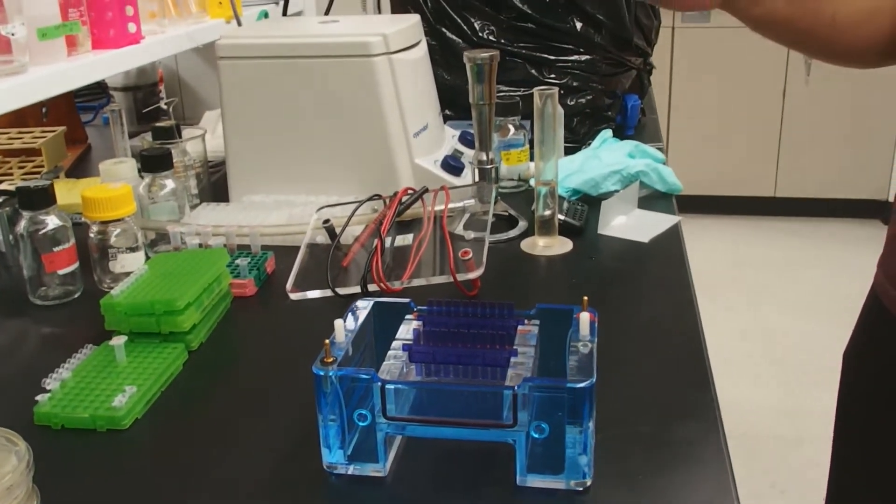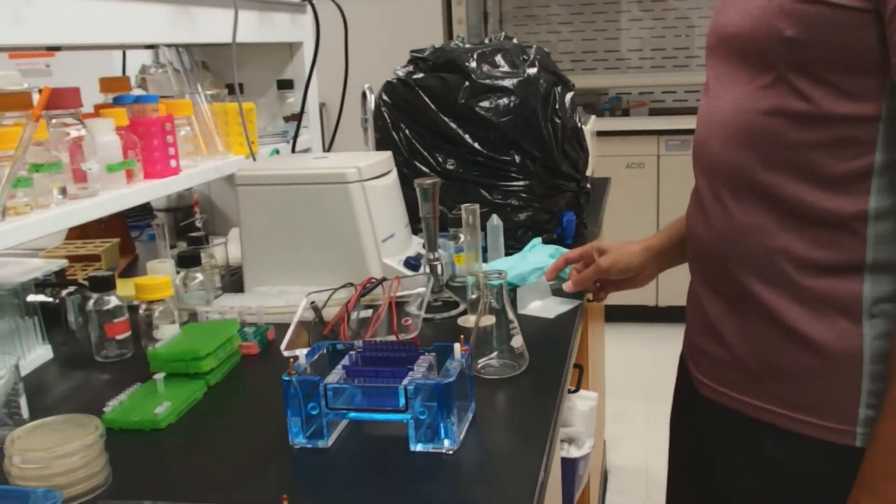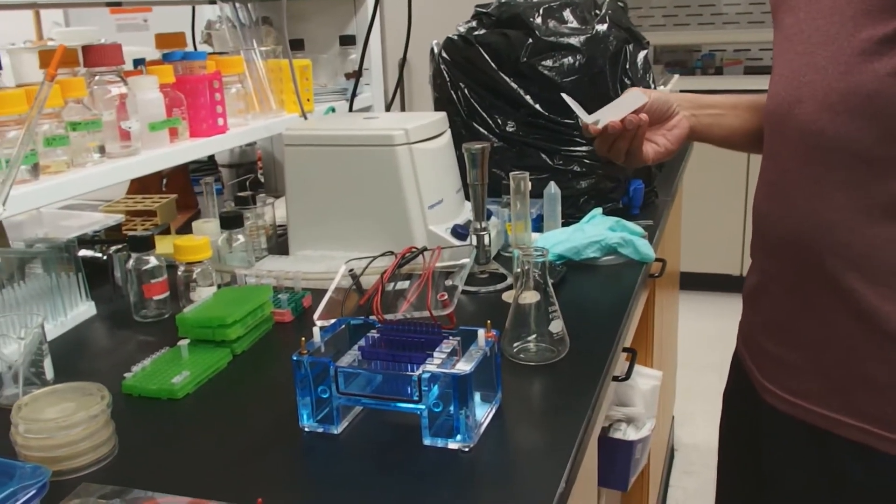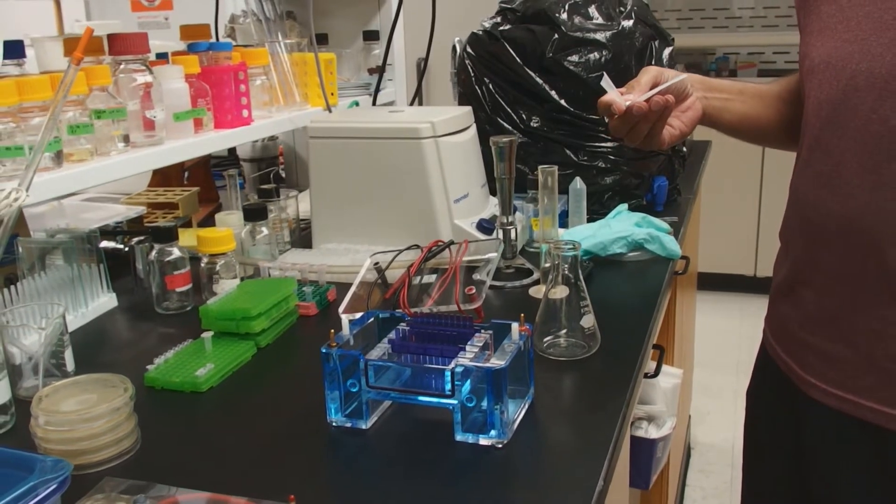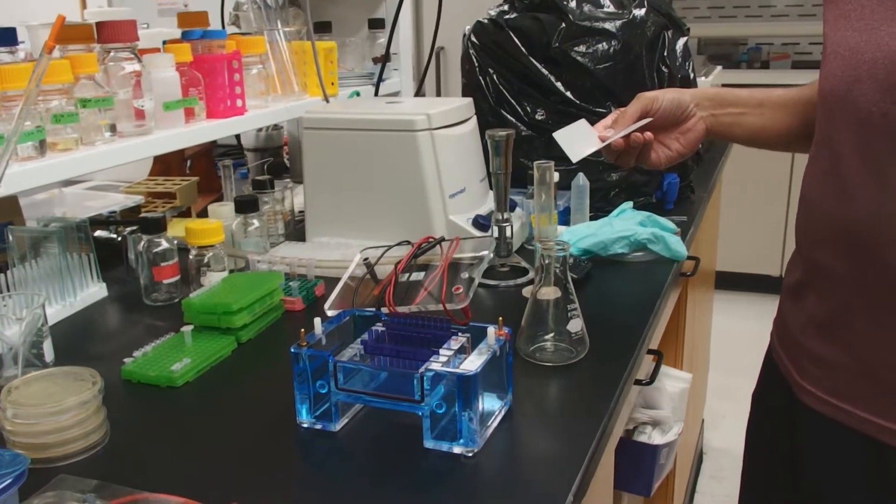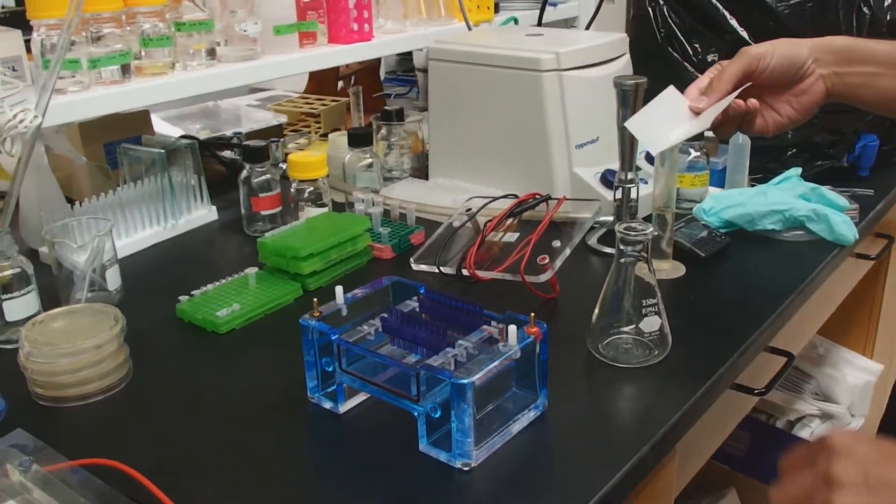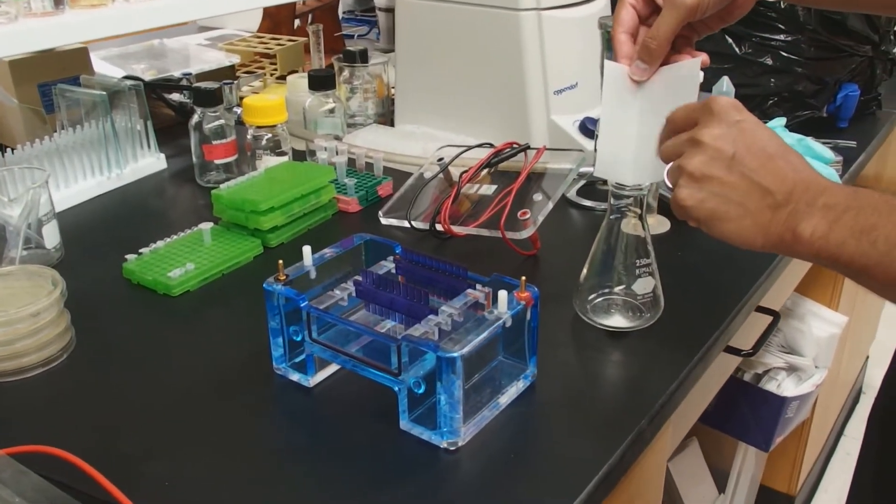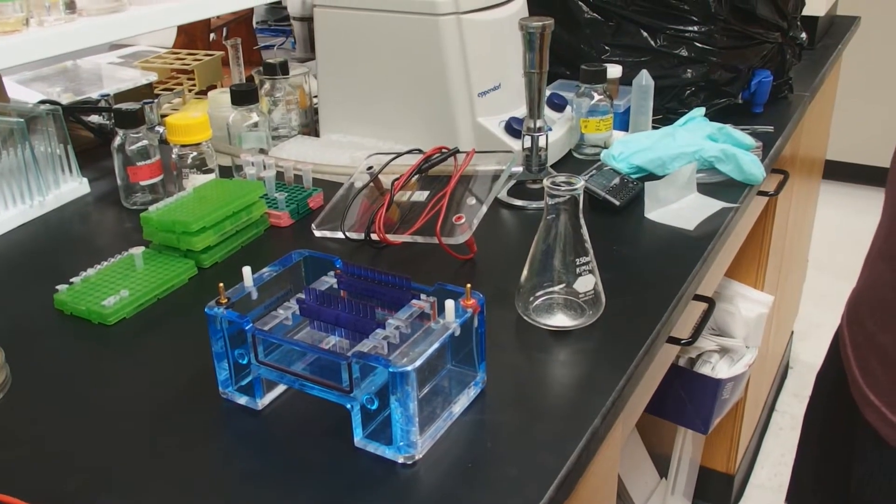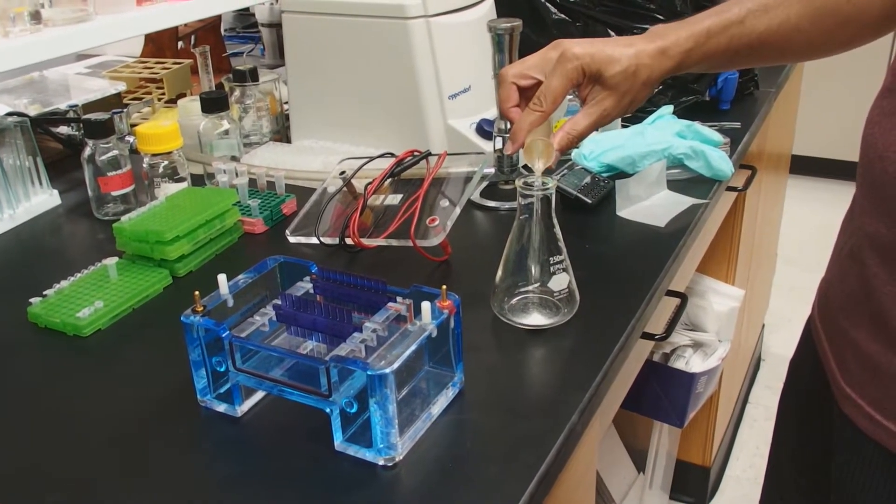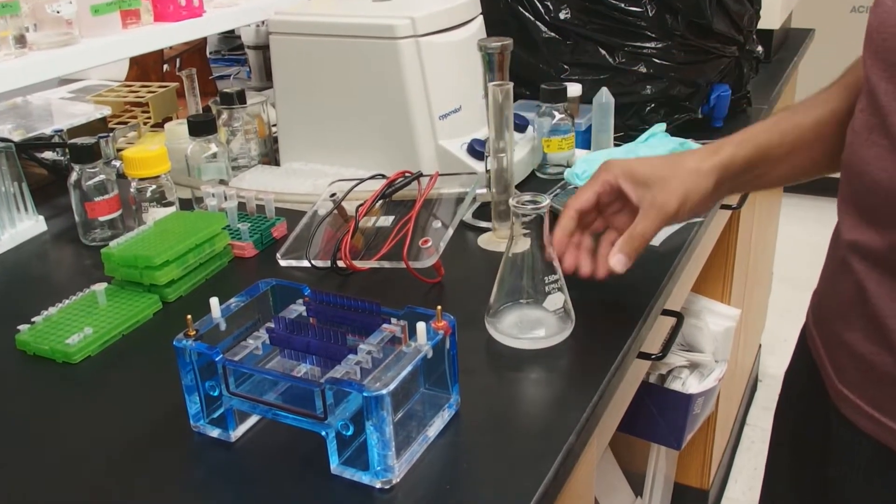Now we have to prepare our agarose solution. We need an Erlenmeyer flask or a bottle. We need agarose. We're going to prepare a 1.2% agarose gel. That's the standard agarose percentage. And we're going to prepare 25 milliliters of this. So here I have 0.3 grams of agarose. Put that into the Erlenmeyer. And I have 25 milliliters of TAE buffer. Put that in there. And now we have to microwave this. So let's go over to the microwave.